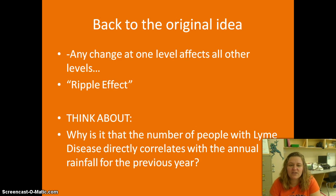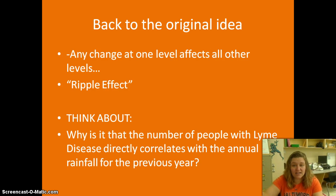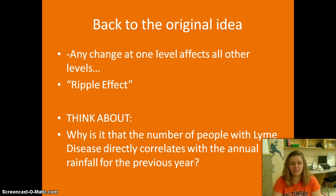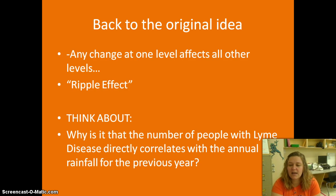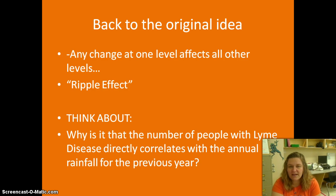Going back to the original idea, any change at one level is going to affect all the other levels — we call this a ripple effect. With the polar bear, if all the polar bears were to die out, the seal population would go up. Then if the seal population goes up, the organisms that seals eat would go down. Think about this: why do you think the number of people with Lyme disease — remember, we get Lyme disease from ticks — directly correlates with the annual rainfall from the previous year?